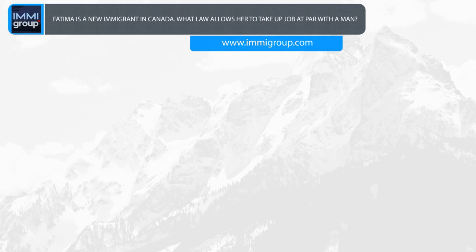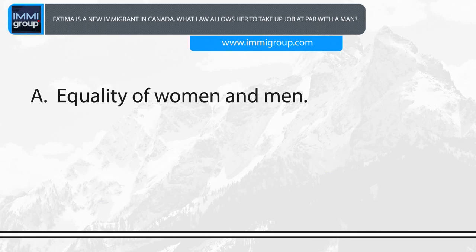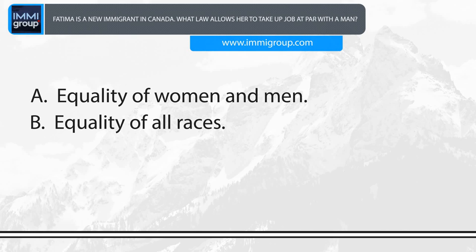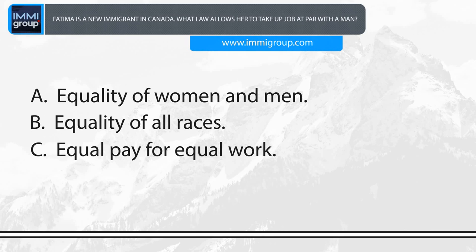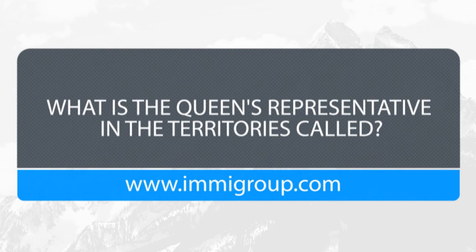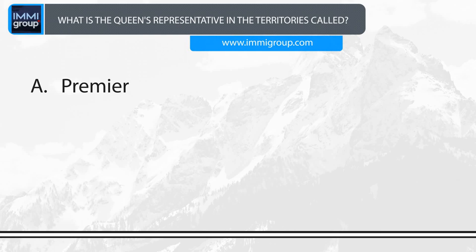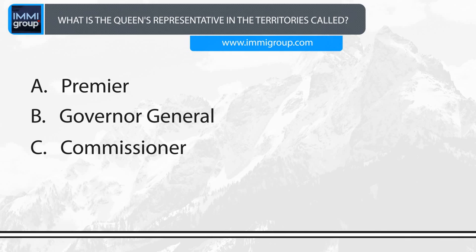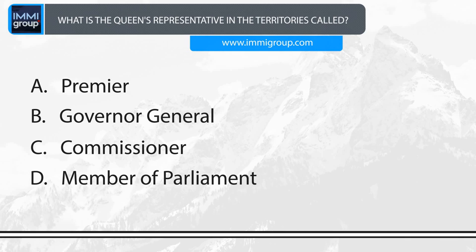Fatima is a new immigrant in Canada. What law allows her to take up a job at par with a man? A. Equality of women and men. B. Equality of all races. C. Equal pay for equal work. D. Equal rights. Answer: Equality of women and men. What is the Queen's representative in the territories called? A. Premier. B. Governor-General. C. Commissioner. D. Member of Parliament. Answer: Commissioner.